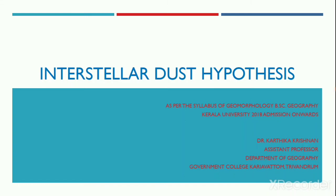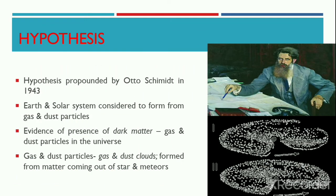The Interstellar Dust Hypothesis is another major hypothesis regarding the origin of Earth and the Universe. In this session we are going to discuss the hypothesis proposed by the Russian scientist Otto Schmidt, propounded in the year 1943.